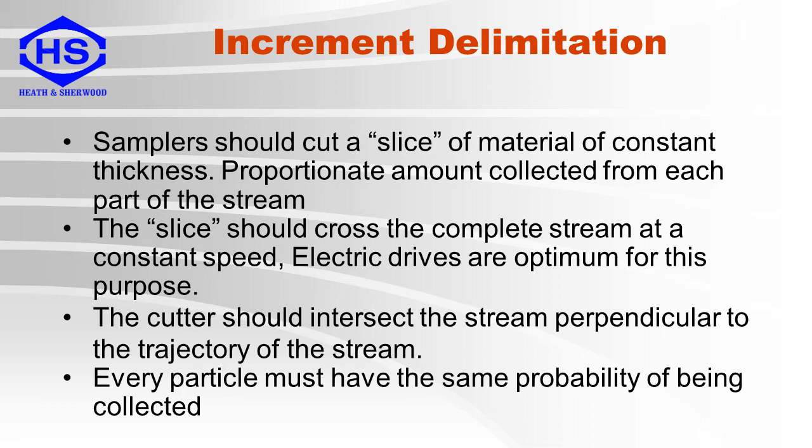In order to obtain representative samples, the requirements for proper incremental delimitation are: samplers should cut a slice of material of constant thickness; a proportionate amount is collected from each part of the stream; the slice should cross the complete stream at a constant speed; electric drives are optimal for this purpose; the cutter should intersect the stream perpendicular to the trajectory of the stream; and every particle must have the same probability of being collected.